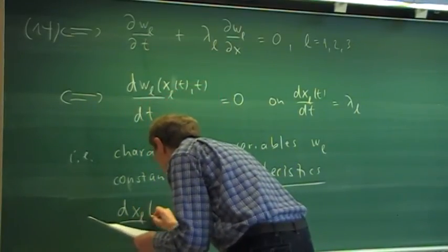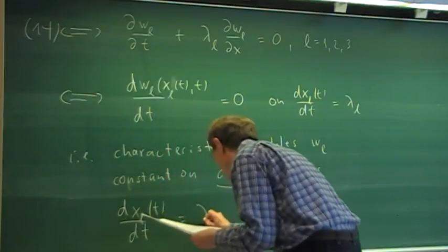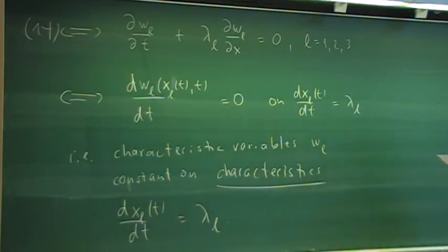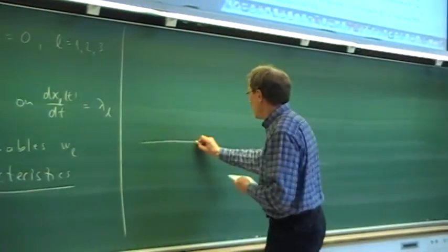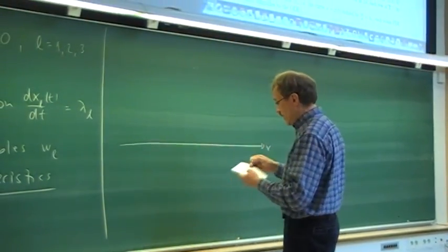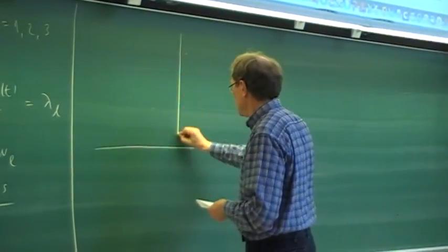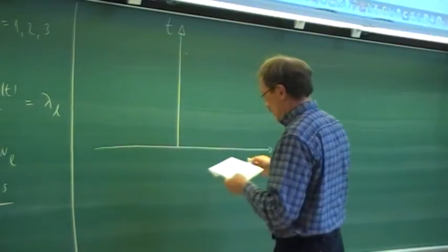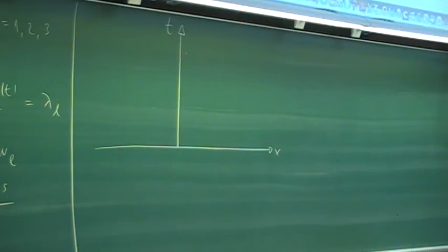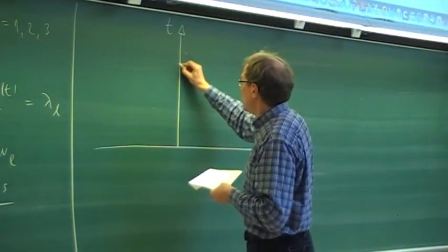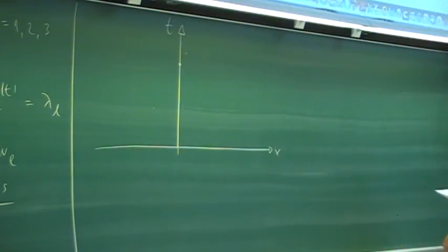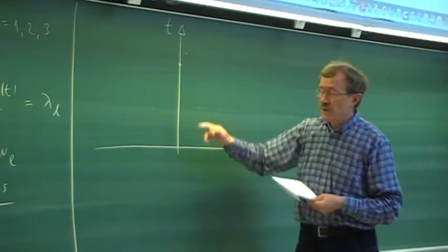The characteristics are given by slope dxL/dt equal to lambda_L. That is important and can be exploited in different ways. The picture in the time-space domain: if we have x and time t, we can think of it in two ways. One way is that we are at a certain point in space, say x0, at a certain time, and then we ask where does the information come from.